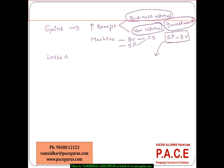If these kinds of transactions result in a loss, they are represented as part of losses. To arrive at the final net income: revenues minus operating-specific expenses for normal business operations, plus any other income minus other expenses, plus non-operating income minus non-operating expenses, and any gains minus losses — all these things put together create the net income.